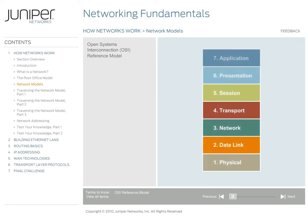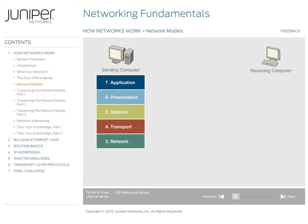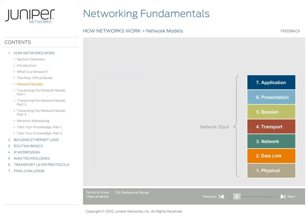To understand networking, it helps to start thinking in layers. In fact, a model was developed many years ago to break up the complex process of sending data from one computer to another into seven steps or layers. Called the Open Systems Interconnection, or OSI, reference model, this model identifies the steps and functions that must be completed at each layer when computers communicate over a network. These seven layers are like a set of building blocks stacked on top of each other — the seven layers combined are often referred to as a network stack.